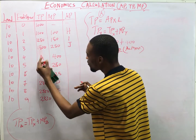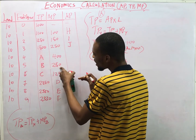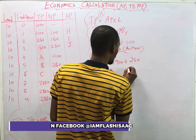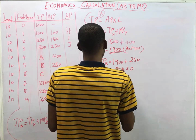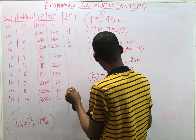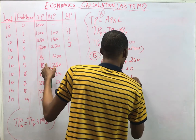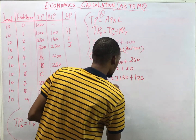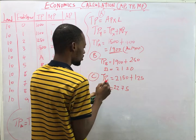For b: TP(b) equals TP above (which is a = 1900) plus the MP corresponding to b, which is 250. So 1900 plus 250 equals 2150. Therefore b equals 2150. For c: TP(c) equals TP(b) which is 2150, plus the MP corresponding to c, which is 125. So 2150 plus 125 equals 2275. Therefore c equals 2275.